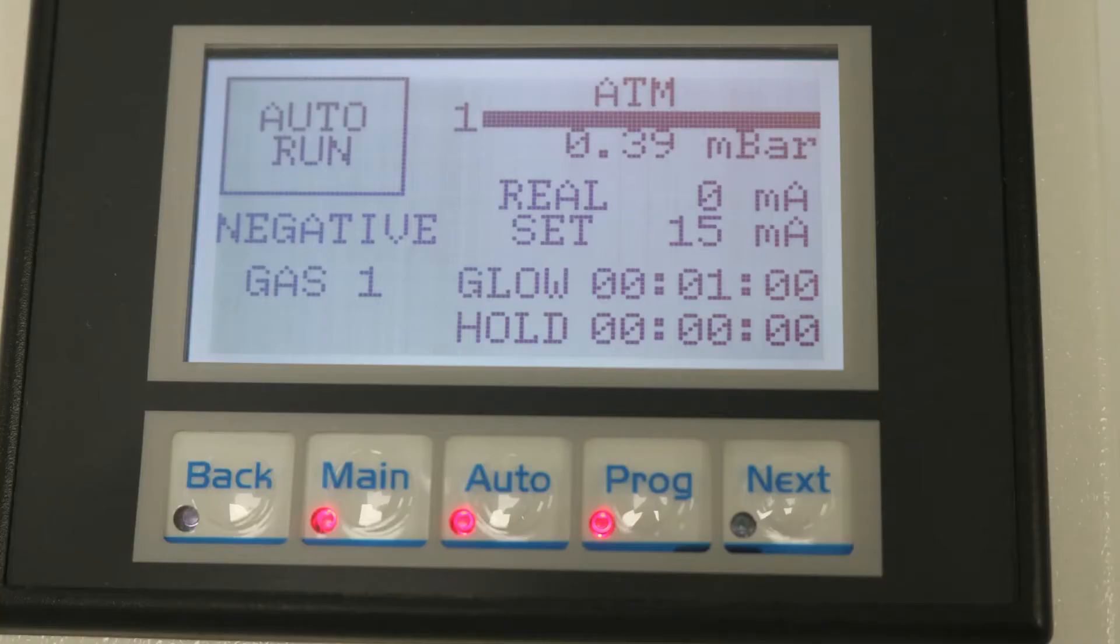Check that the screen shows the following text. If not, consult the manual. Run the automatic program by pressing AUTO RUN on the touch screen.